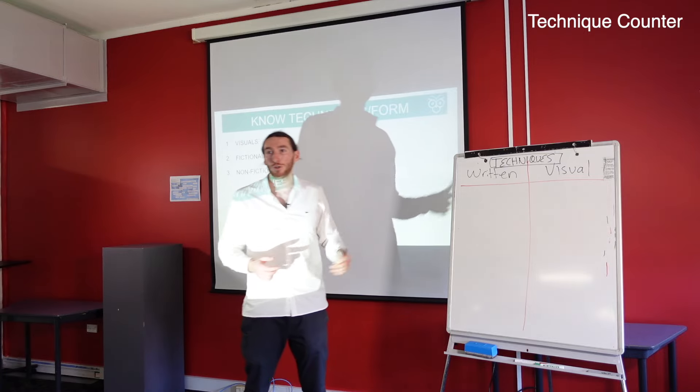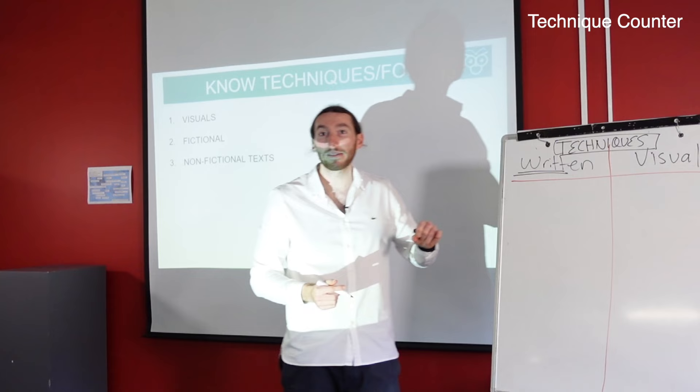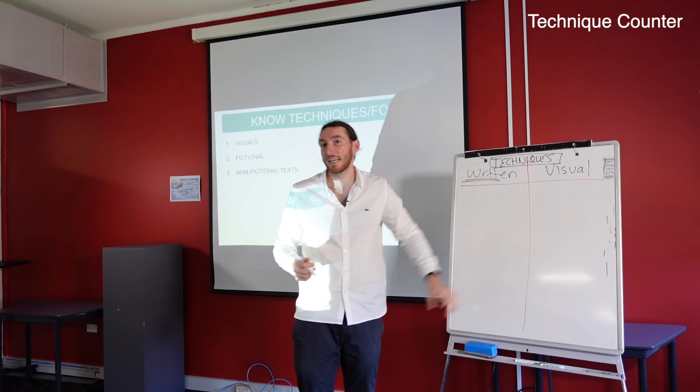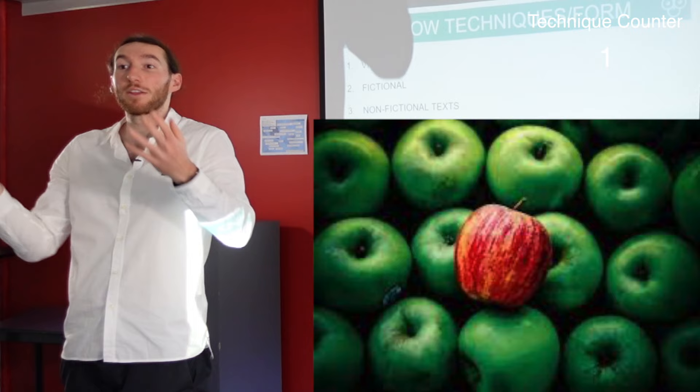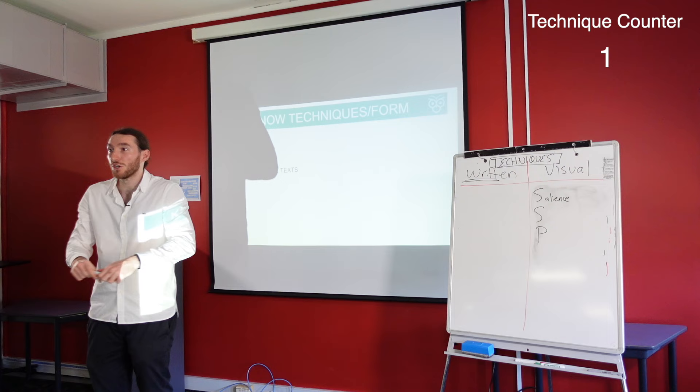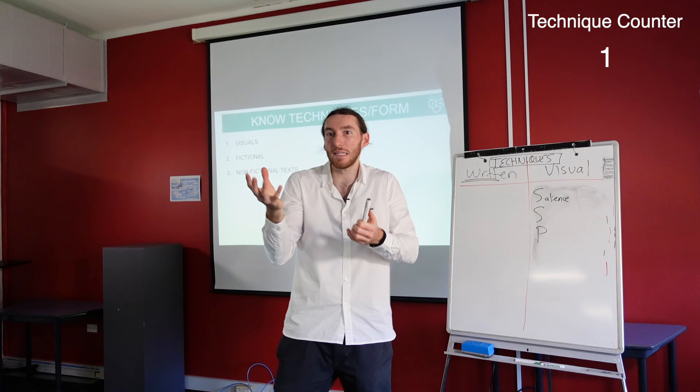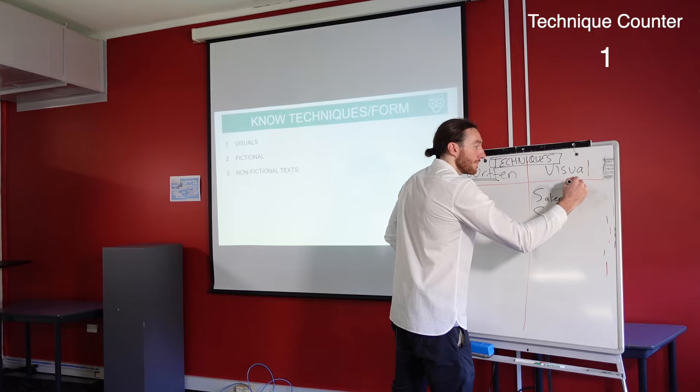Let's start with visuals. You might not get a visual text in the exam — exams are now favoring written texts. But if you get an image, use SSP. The first S is salience. Salience is the focal point of the image — it is where your eyes are immediately drawn, where something just pops out in a photo. That's the salient point, the focal point.